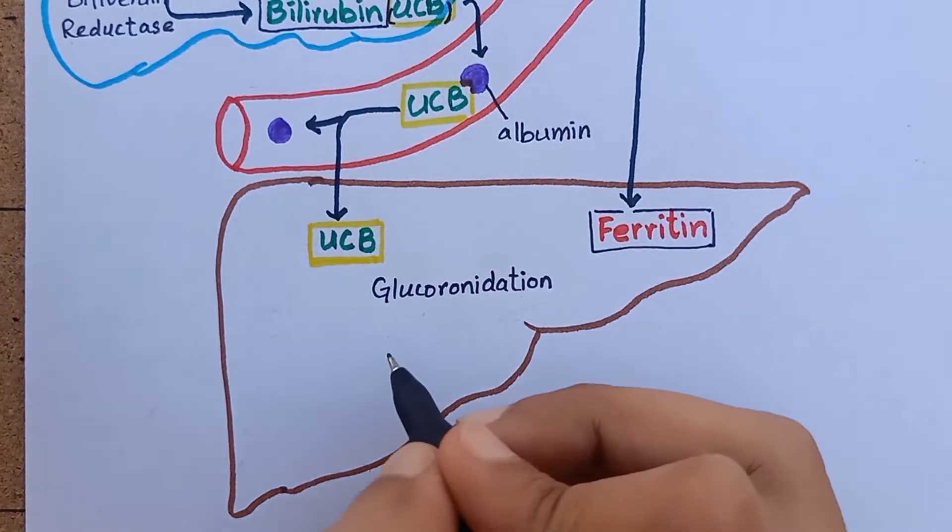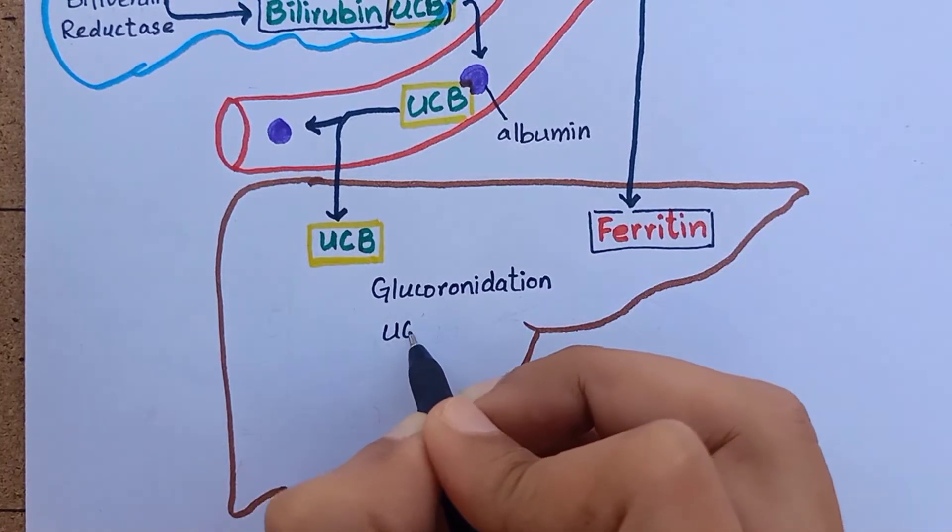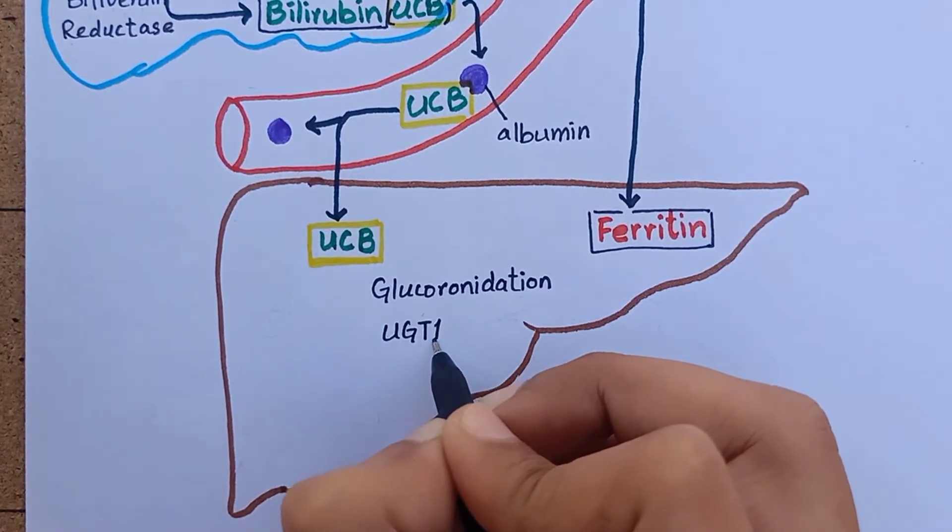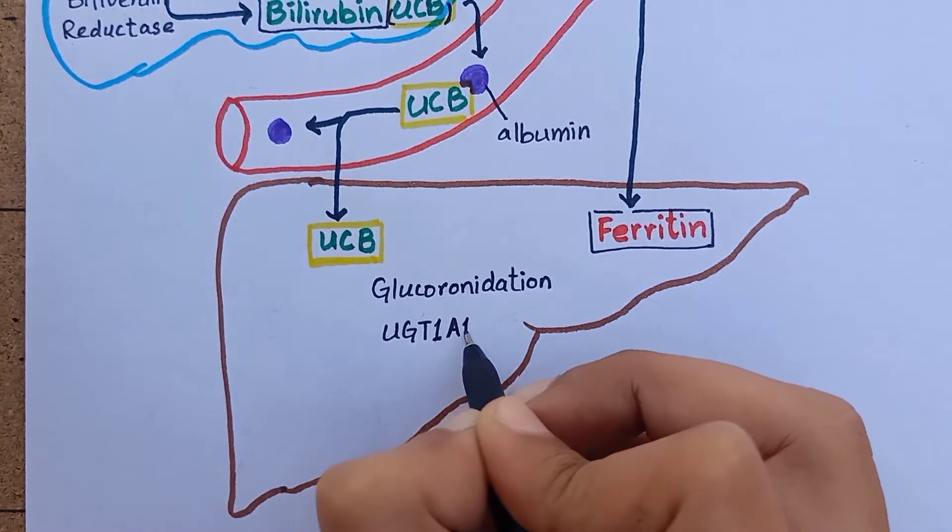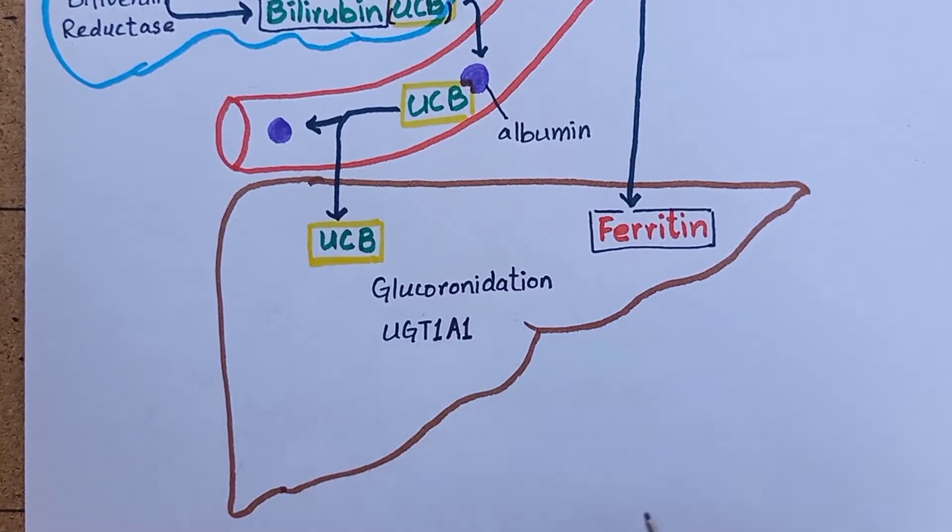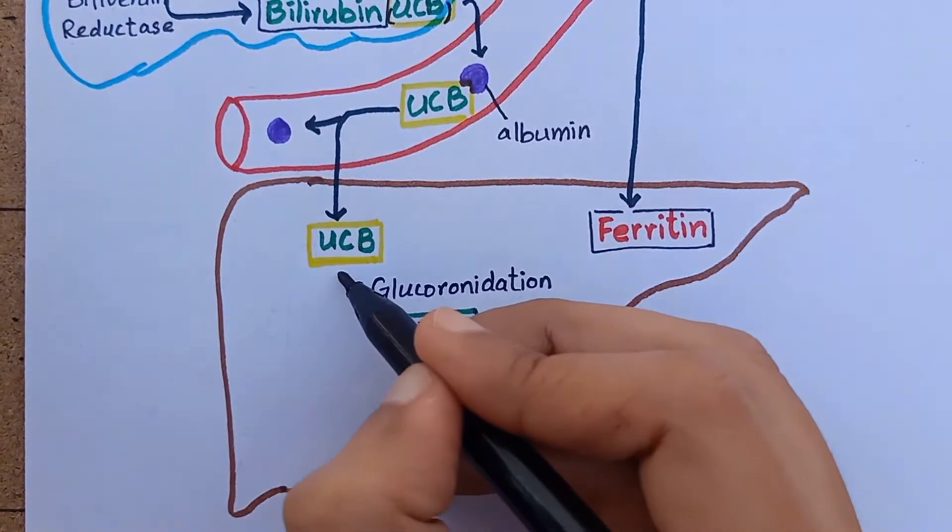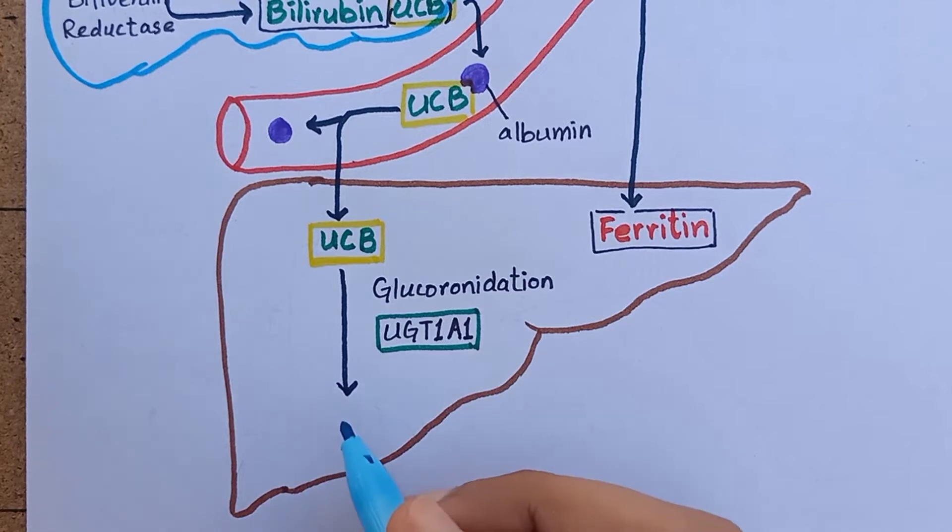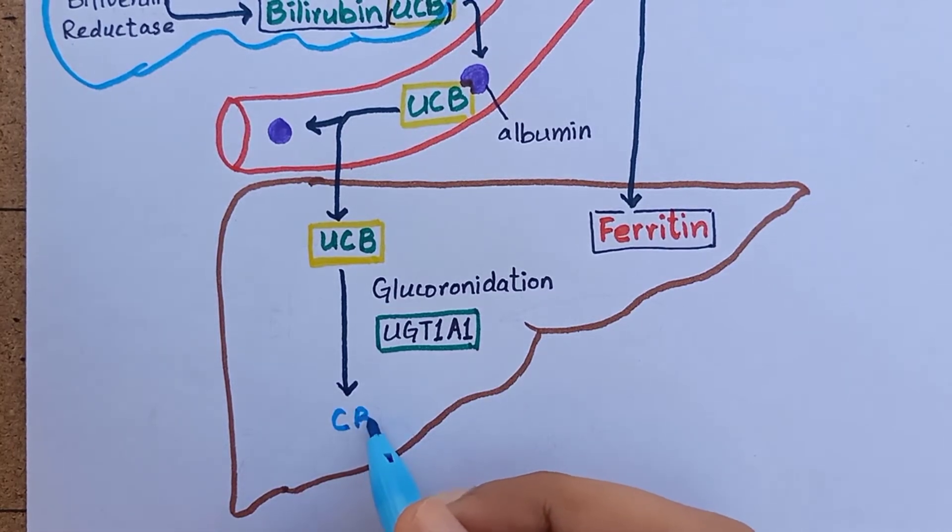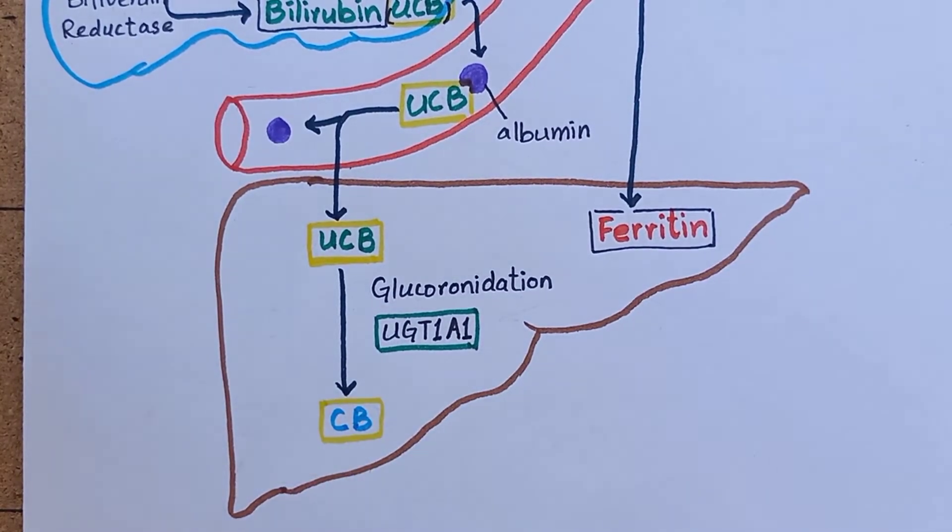Glucuronidation is carried out by a family of enzymes called uridine diphosphate glucoronyltransferase UGT or specifically UGT1A1 in case of bilirubin. The unconjugated bilirubin is now conjugated bilirubin and it is water-soluble.